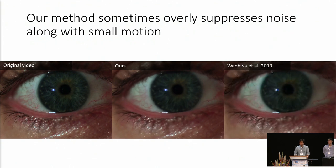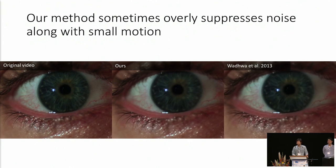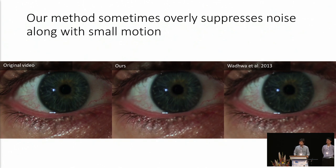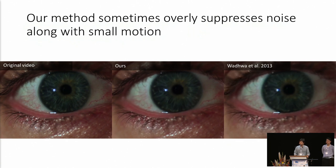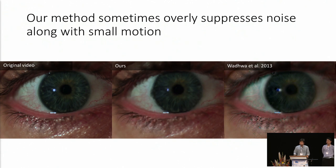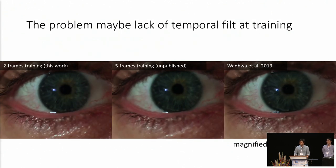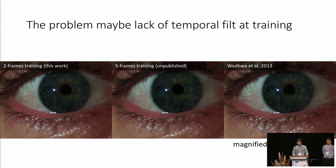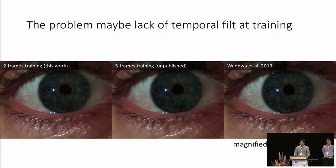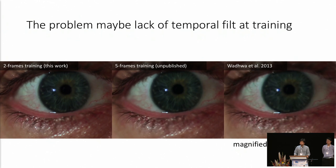Despite these successes, we observe that our method can sometimes overly suppress noise along with small motion we may have hoped to magnify. In the eye sequence, the phase-based method correctly magnifies small motion, while our method shows little or no motion except when motion is large. We believe this is a problem with the temporal filter: our network was trained only on two frames, whereas the temporal filter used here is a 200-tap FIR filter. In a follow-up experiment, training with five frames and a five-tap FIR filter as input brought some motion back, though edges appear somewhat noisier.